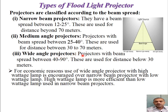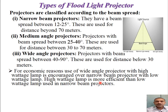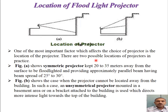Wide angle projectors produce a beam angle above 40 degrees and up to 90 degrees, and can be installed near the building itself, used for distances below 30 meters. For economy reasons, wide angle projectors using high wattage lamps are preferred over narrow beam projectors using low wattage lamps, because high wattage lamps are more efficient, resulting in savings in energy and running cost.